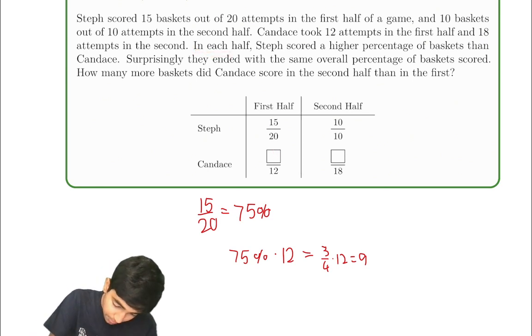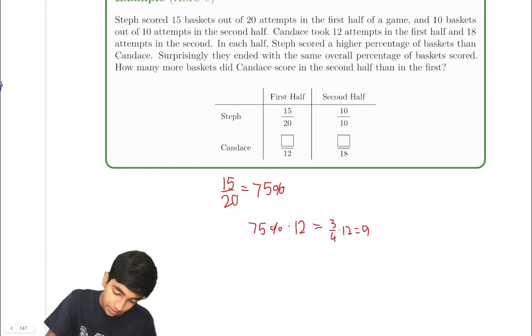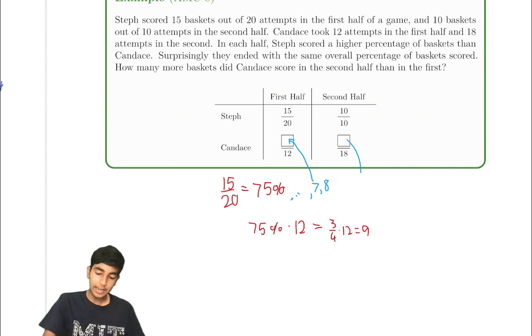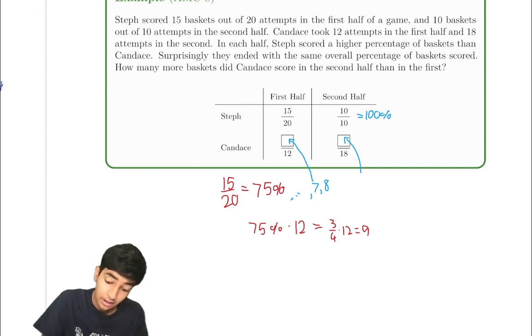So this can be eight, it's going to be less than nine. So it can be anything from one to eight or even zero for that matter. These are all the possibilities. So this can be anything that's eight or less. Now, what about in the second half? Well, Steph's percentage is 100%. So anything less than 100% for Candice is acceptable. It can be 18. 18 out of 18, that's 100%. It needs to be less. So anything less than 100% is good. 17, 16, 15, so on.